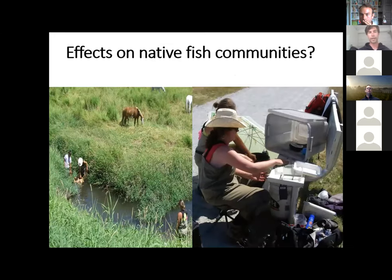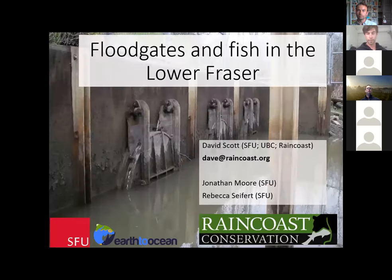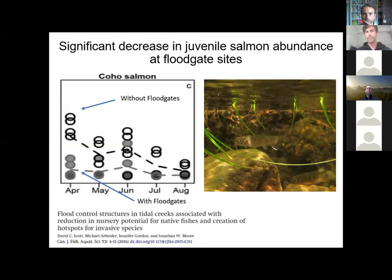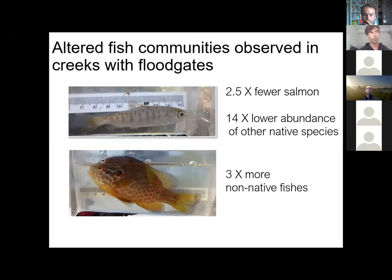We also wanted to look at what the effect was on native fish communities. I had five sites with floodgates and then five reference sites without floodgates — it was a real challenge to find five reference sites without floodgates in the lower Fraser, just to give you an idea of the extent of the issue. We went out with minnow traps and beach seines throughout the summer. What we found was a statistically significant decrease in juvenile salmon at sites with floodgates compared to the reference sites — two and a half times fewer salmon at sites with floodgates.